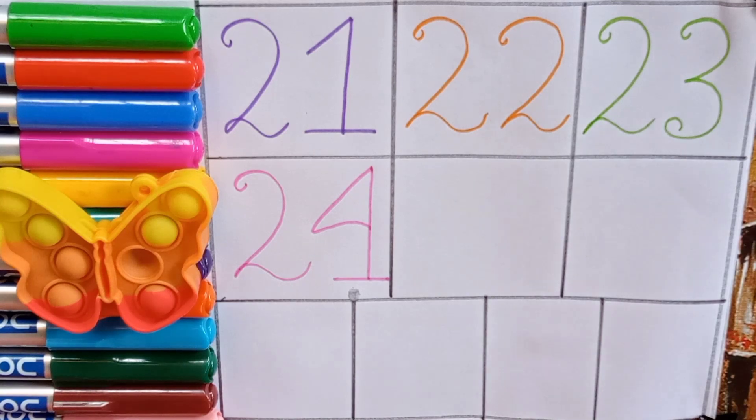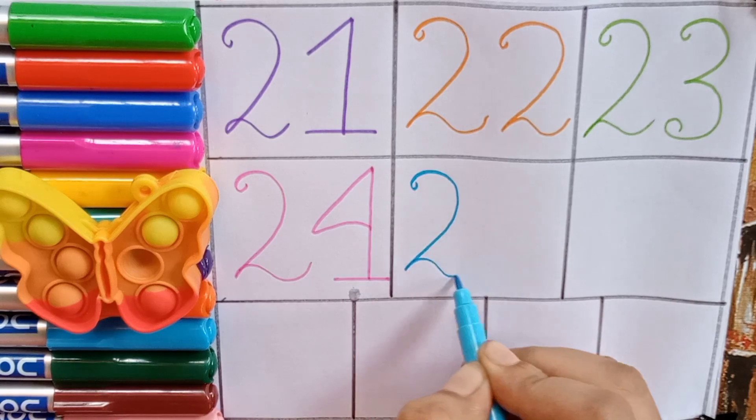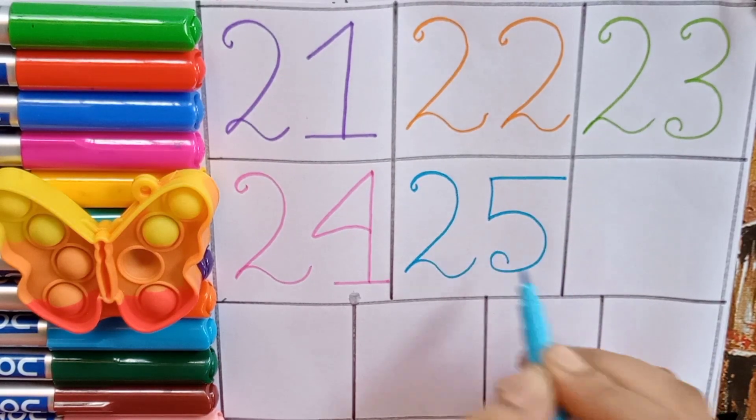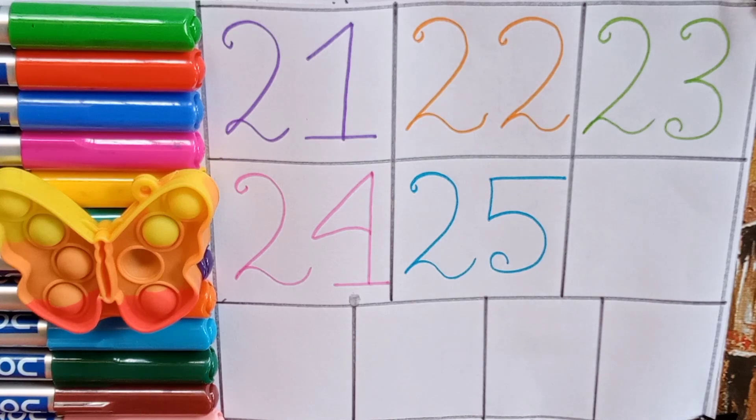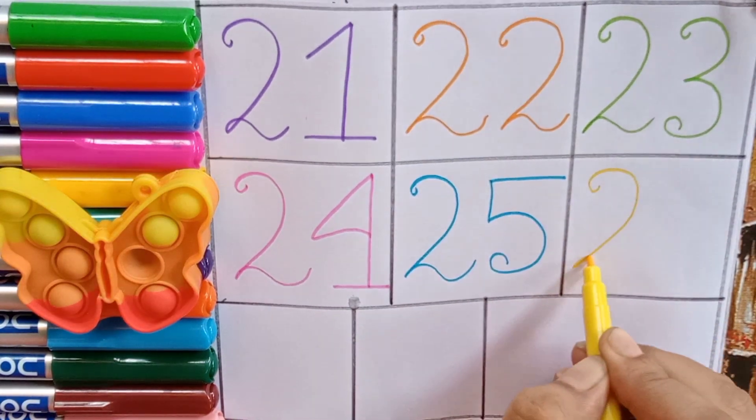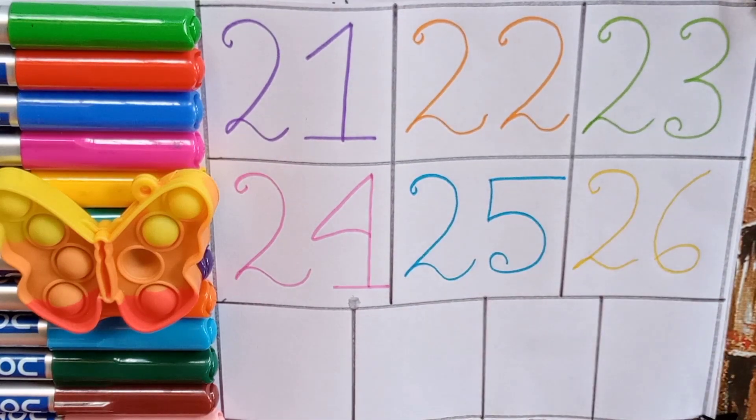Sky blue, two, five, twenty-five. Two, five, twenty-five. Yellow, two, six, twenty-six. Two, six, twenty-six.